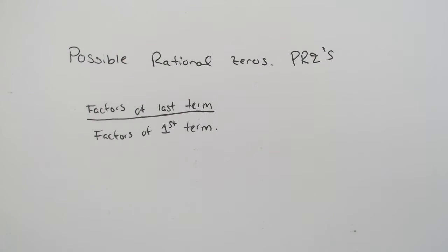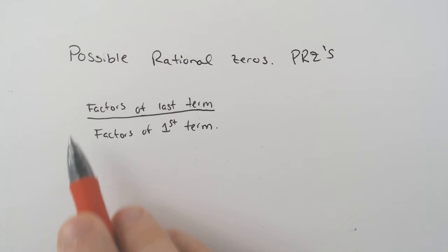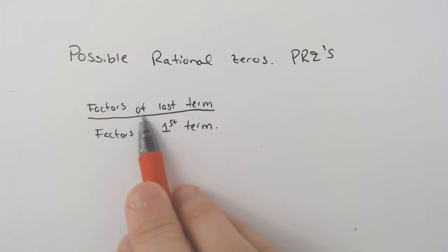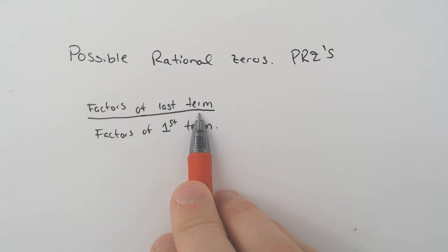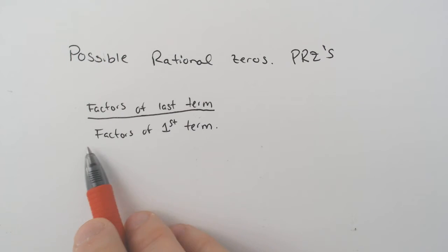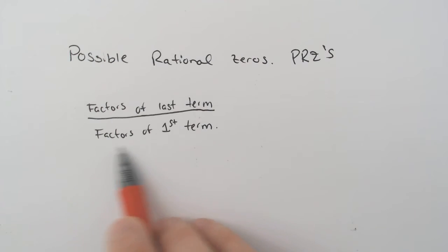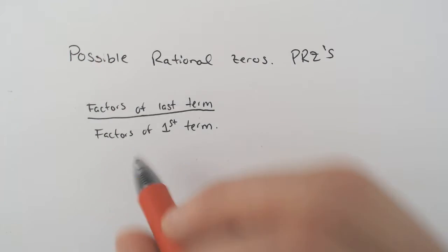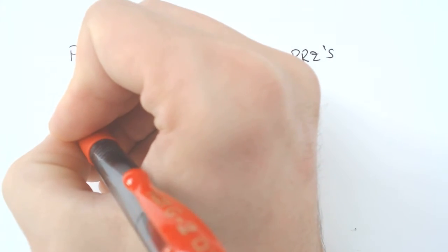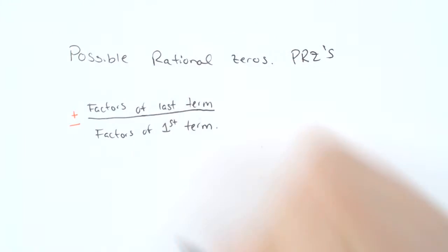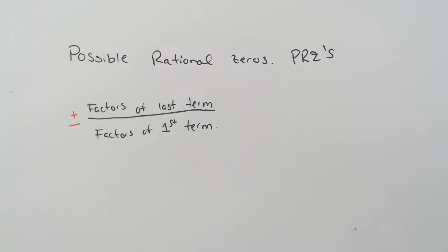You find them relatively easily. You take your factors of the last term — all of them — and divide, or put it over and make it a fraction of the factors of the first term. It includes all of the positive and negative values when you do it.